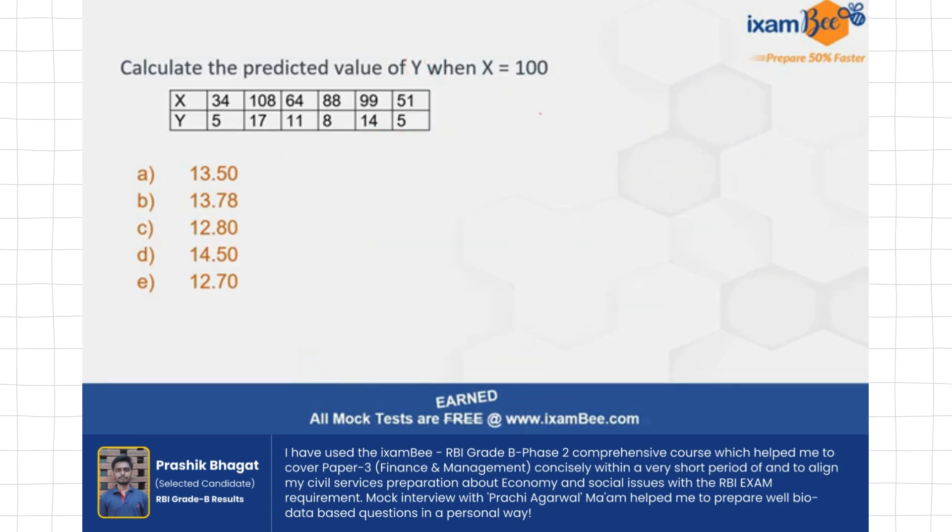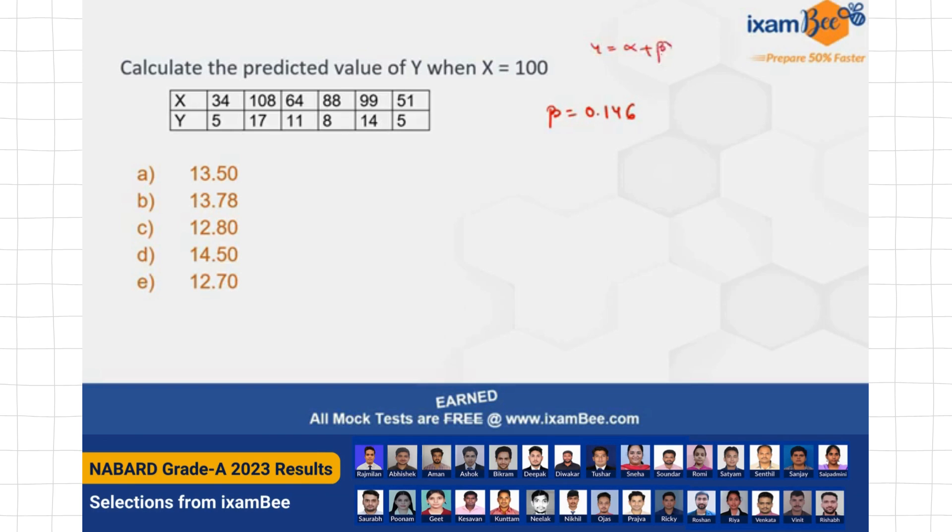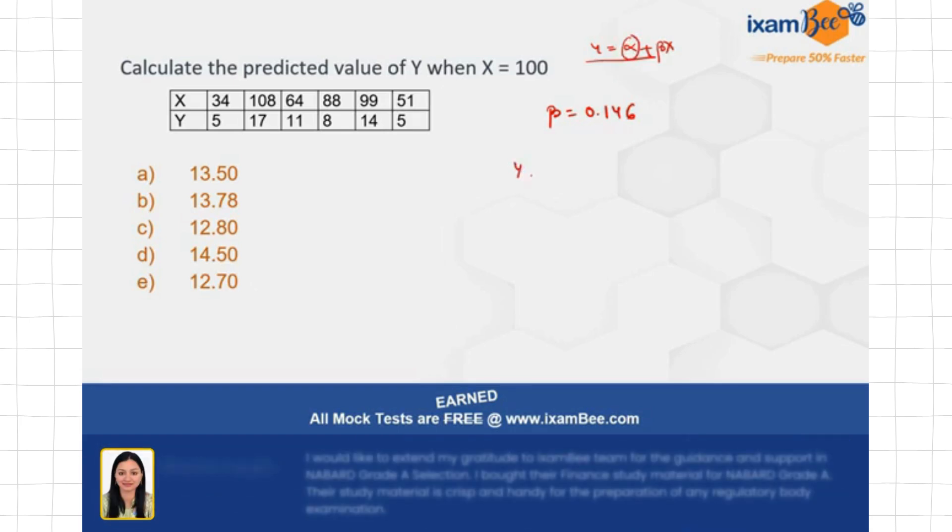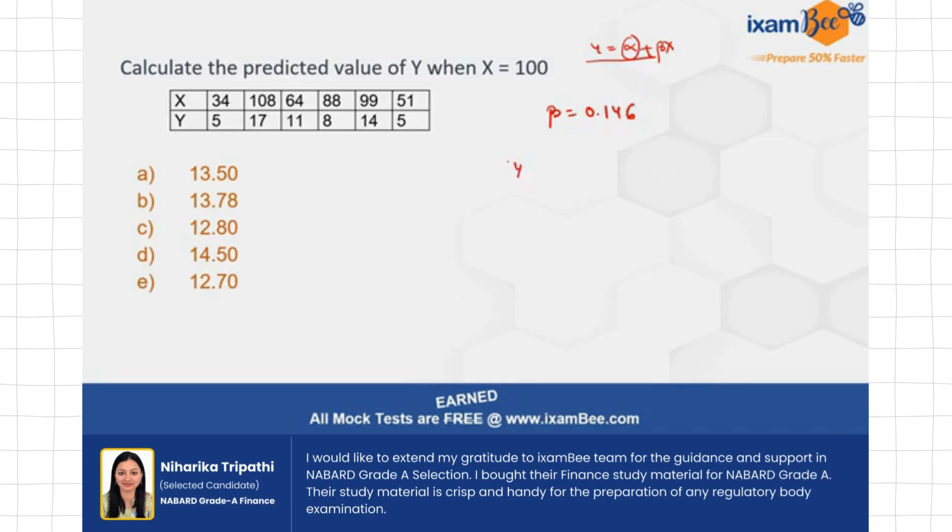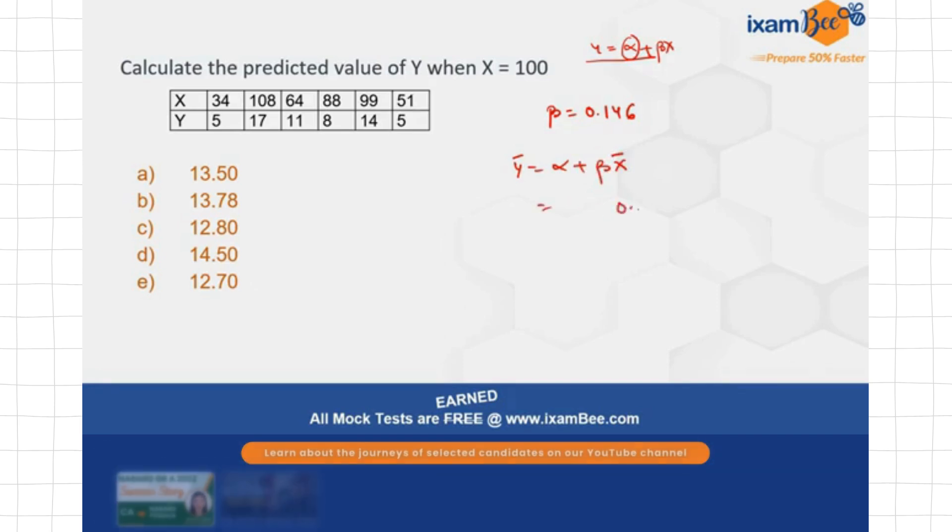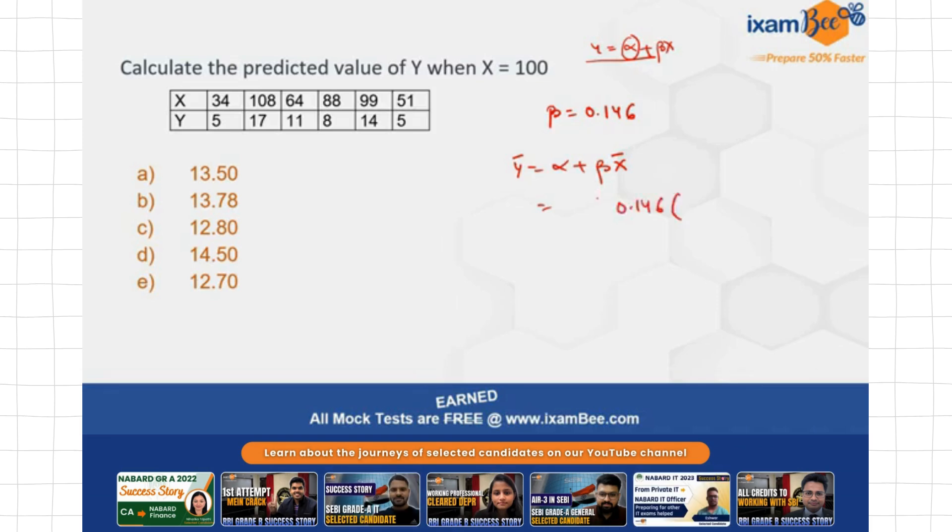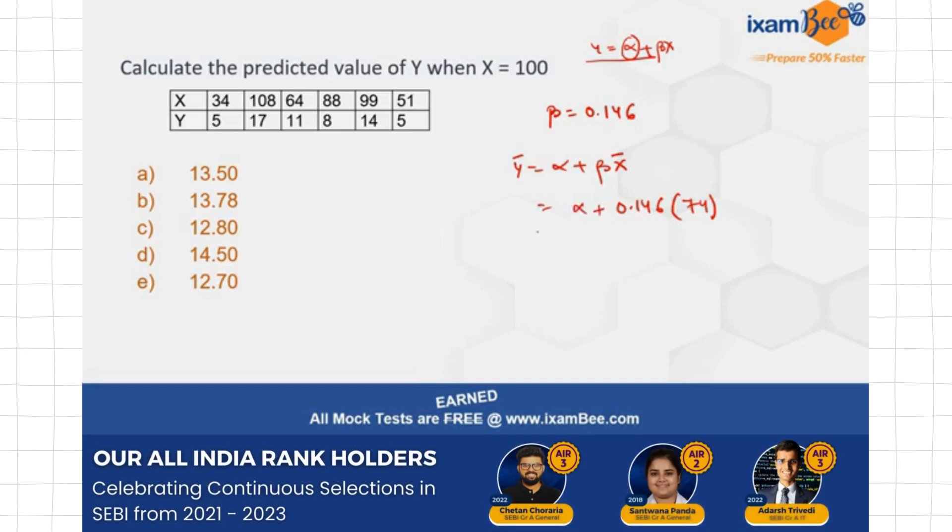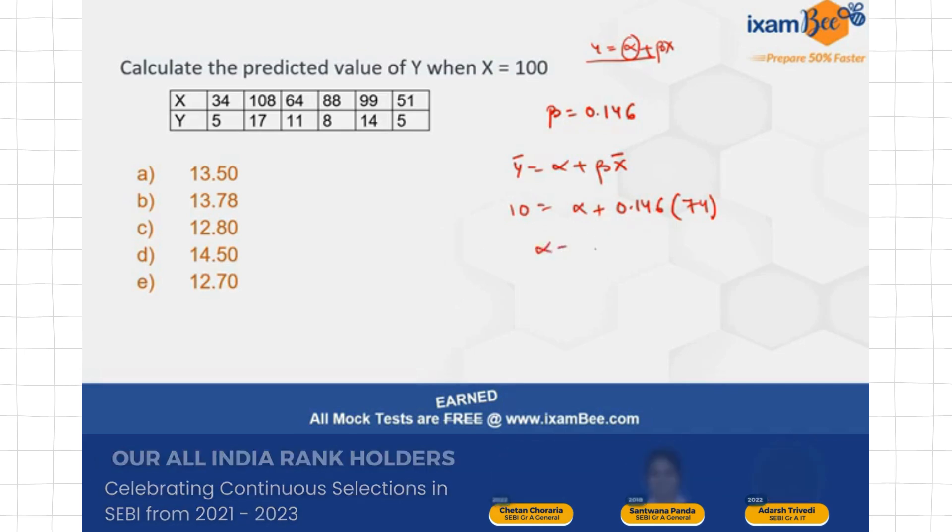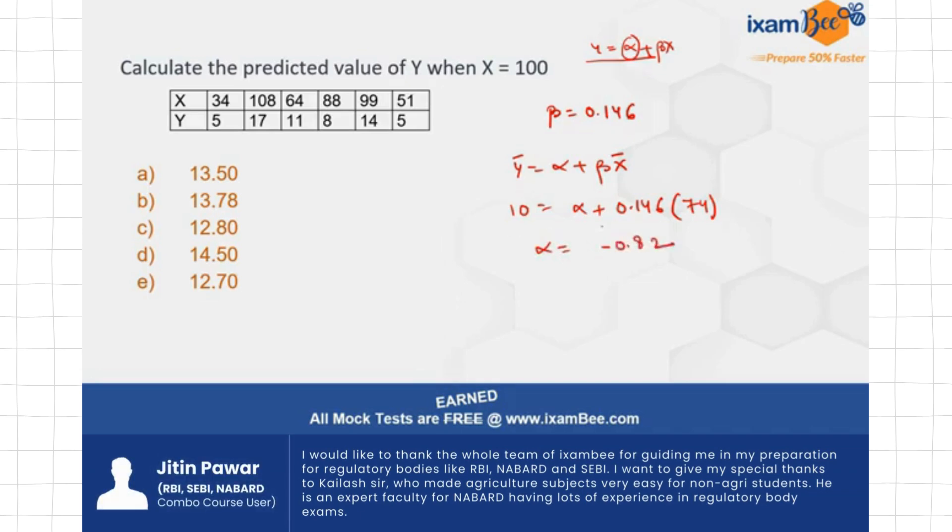So beta is 0.146. Now I need, in the regression equation, it is y is equal to alpha plus beta x. So I need the value of alpha now. How will I get the value of alpha? Alpha is going to be, see, we also know that the regression equation satisfies that it passes through the mean value. So it will also satisfy this equation, y bar is equal to alpha plus beta x bar. So you know the value of beta, it is 0.146. What was x bar? x bar we calculated earlier, which was 74 in the last slide. And alpha, we don't know, we need to find out. And y bar was 10. So you solve this equation and get the value of alpha. So alpha is going to be minus 0.82 when I solve this equation.